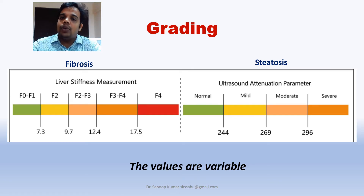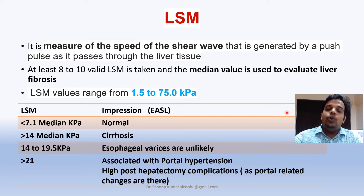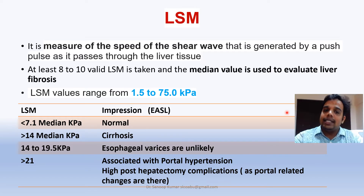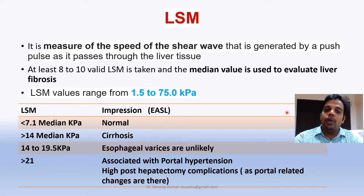For steatosis, the Controlled Attenuation Parameter or Ultrasound Attenuation Parameter above 240 indicates steatosis, and above 300 indicates severe steatosis. LSM cut-off values vary depending on criteria — EASL guidelines suggest less than 7.1 KPA as normal, more than 10 as F3 fibrosis, and more than 14 as cirrhosis. Additionally, if LSM is between 14 and 19.5, esophageal varices in that cirrhotic patient are less likely; but if LSM is more than 21, associated portal hypertension with features such as esophageal varices or ascites may be present.